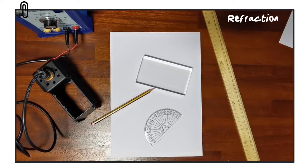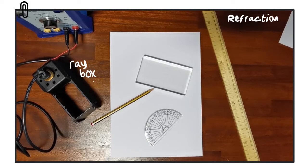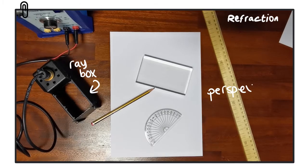In order to do that, we need a ray box, we need a block made from glass or perspex - this block in particular is perspex - and we need a protractor to measure those angles.